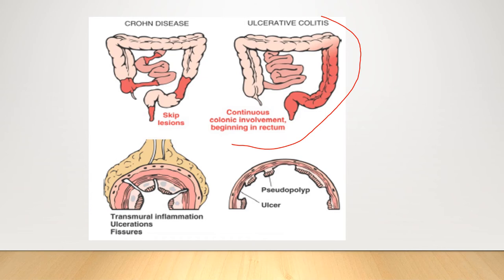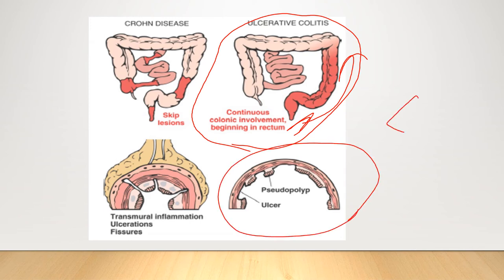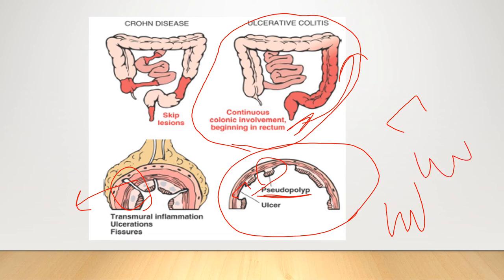This picture shows continuous colonic involvement in ulcerative colitis, beginning in the rectum and traveling retrograde to involve the colon. We can see broad-based ulcers in ulcerative colitis, contrasting with the serpentine ulcers of Crohn's disease, as well as pseudopolyps — finger-like extensions due to intensive regeneration of mucosa that bulges out into the lumen.